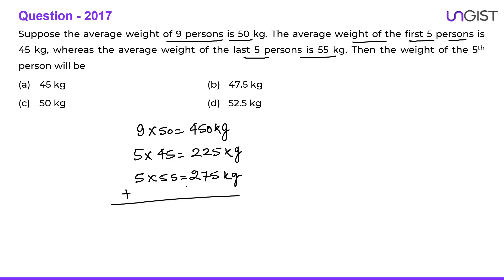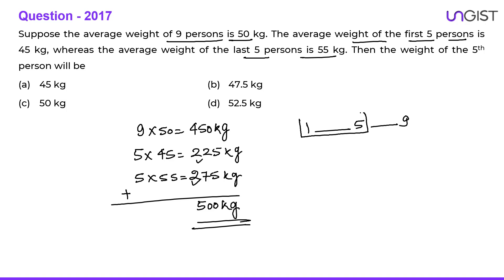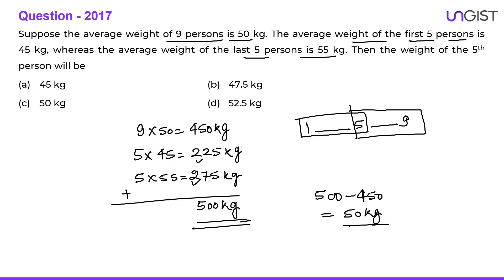Adding the two groups: 225 + 275 = 500 kg. However, the first 5 and last 5 overlap at the 5th person, who is counted twice. So we subtract the total weight of all 9 persons: 500 − 450 = 50 kg. The 5th person's weight is 50 kg. It should be calculated only once but was counted twice, so we subtract the total. Option C is the correct choice.